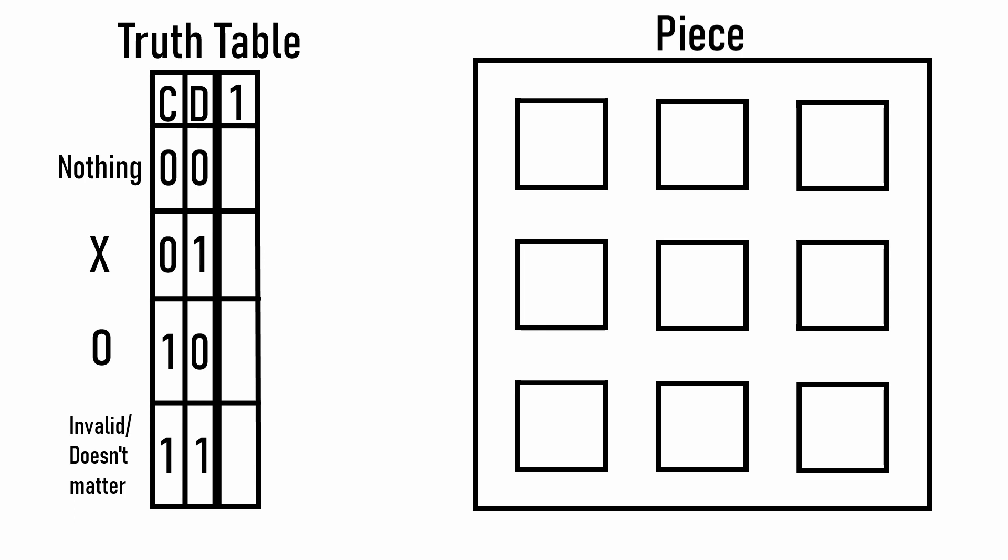Okay, now that we know what each of these states should display, we're ready to finish the table. Let's start here when C and D are off. Well, we said that nothing should display, so we can fill in a 0 or off. In the next state, though, things get interesting.